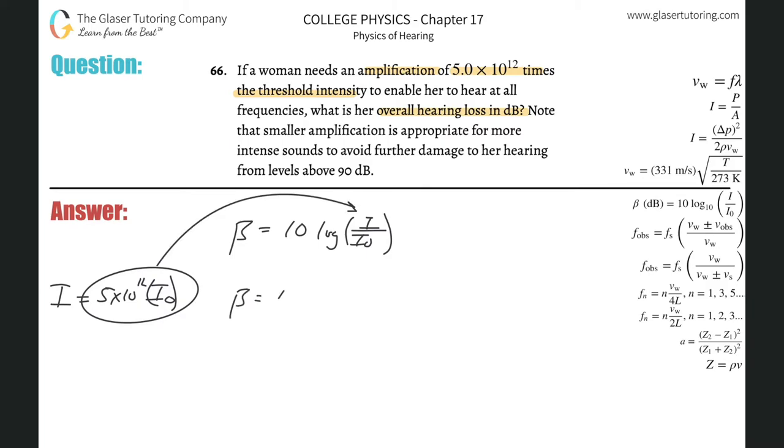So the beta value here is going to be equal to 10 times the log of 5 times 10 to the 12 times I sub 0, all over I sub 0. Notice how the I sub 0's cancel. And now we can plug this into the calculator.